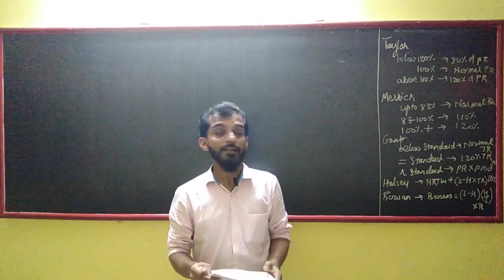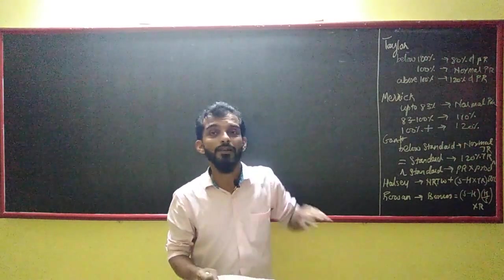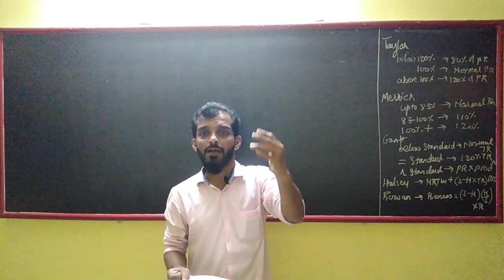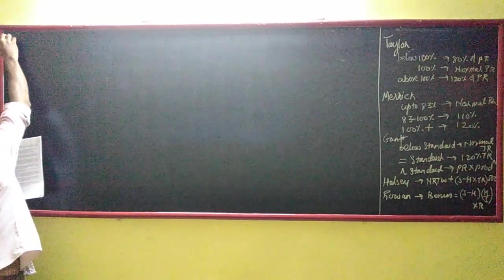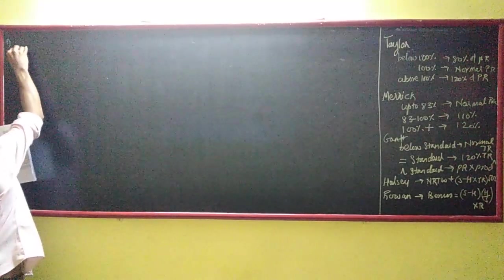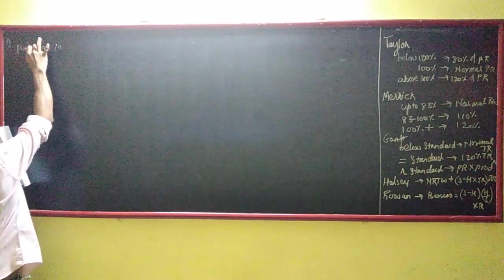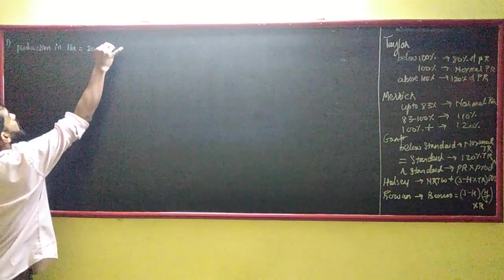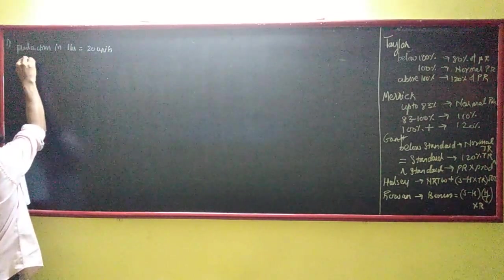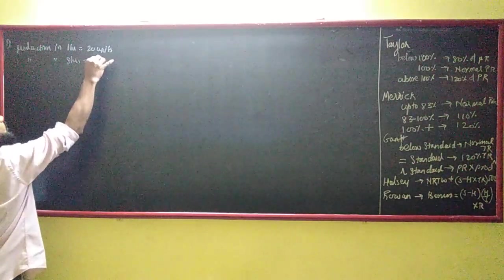Find their total remuneration under the Taylor Plan. Now, the piece rate applies at 100%, below 100%, and above 100% — we need to know whether 100% work has been done or not. Standard production in one hour is 20 units, so in 8 hours the standard production should be 160 units.